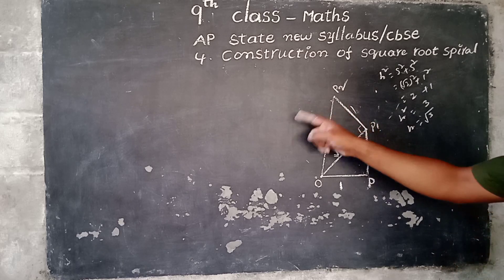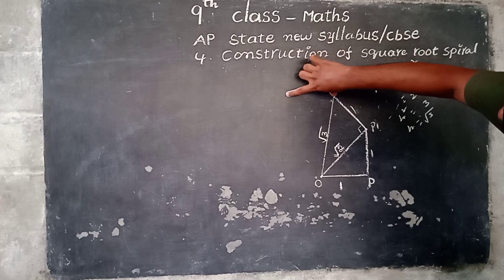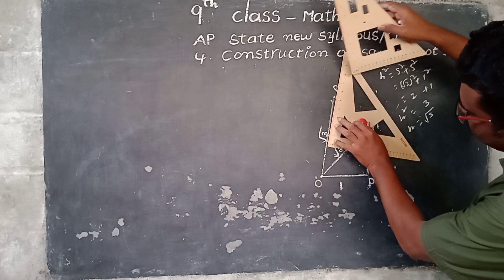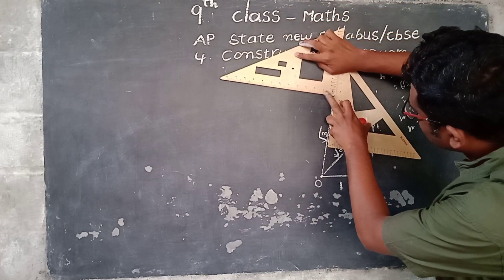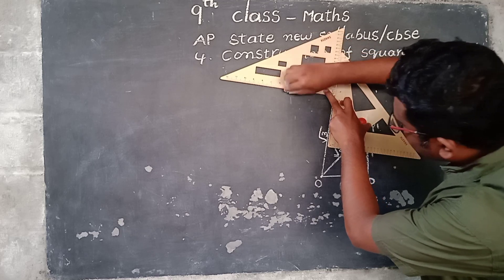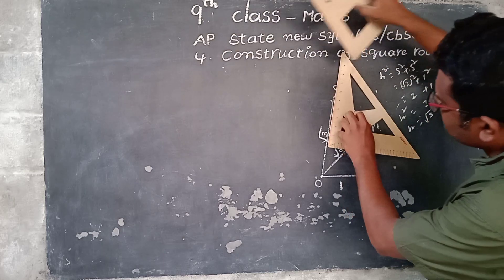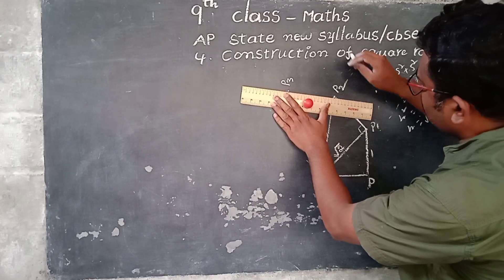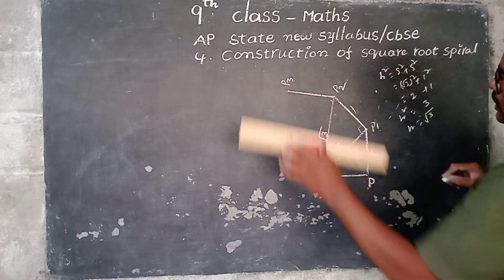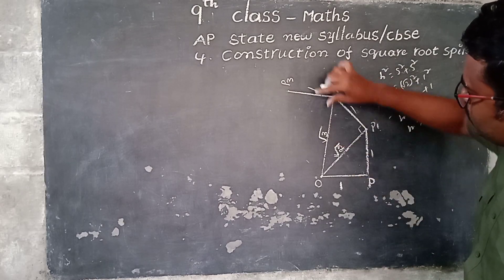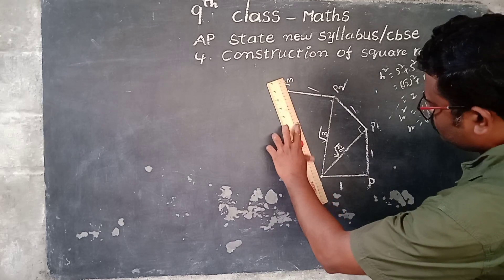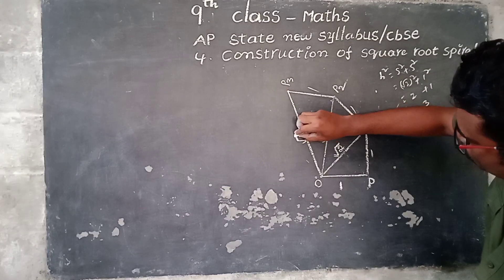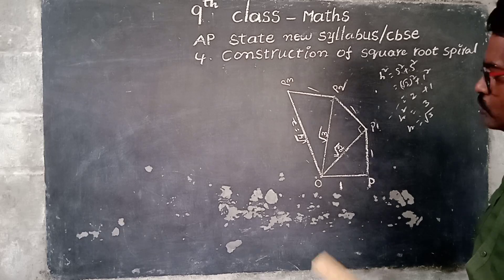Repeating the process: at P2, construct a perpendicular of unit length. Let this point be P3. Joining P2 and P3 is one unit length. Now root 3 squared plus 1 squared equals 3 plus 1 equals 4, and the square root of 4 is 2. So joining O to P3 gives root 4, which equals 2. Again, at P3, draw a perpendicular of unit length and let this be P4.